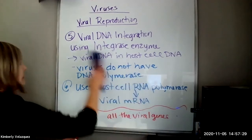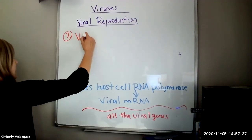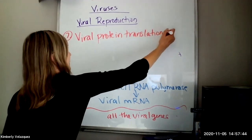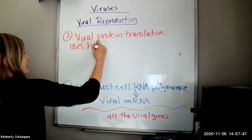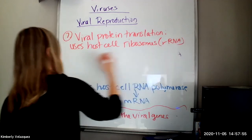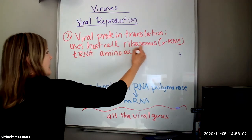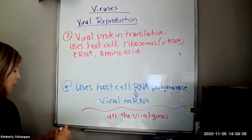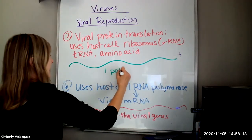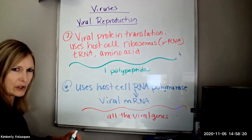It's going to use host cell machinery to start assembling viral proteins. So viral protein translation is going to be step seven. So it's going to use everything the host cell has for making proteins. It's going to use host cell ribosomes, which includes the host cell ribosomal RNA, host cell tRNA, host cell amino acids, to make its proteins. And it's going to make one long polypeptide chain. Again, it's not trying to just make one protein. It's going to make one polypeptide that represents all of its proteins.